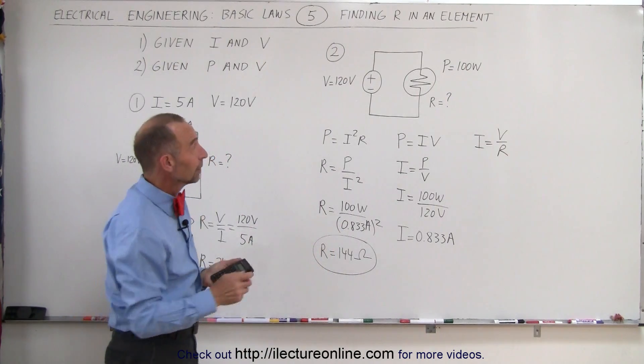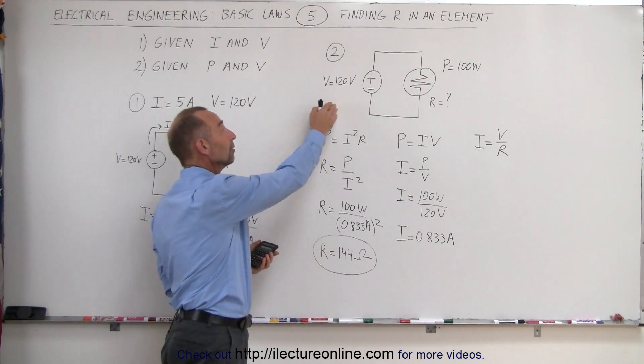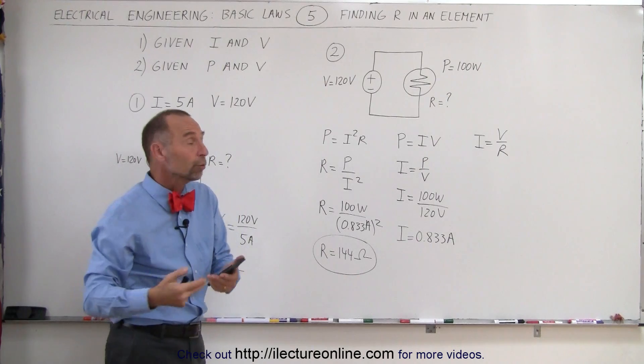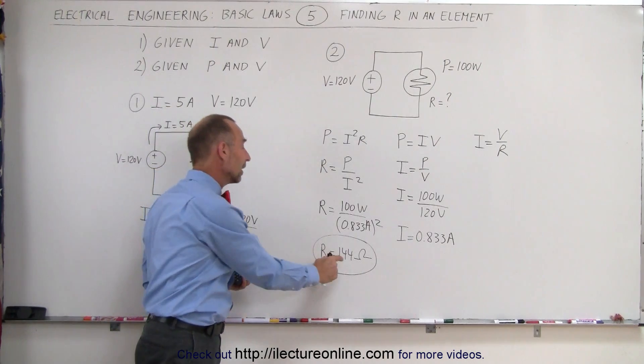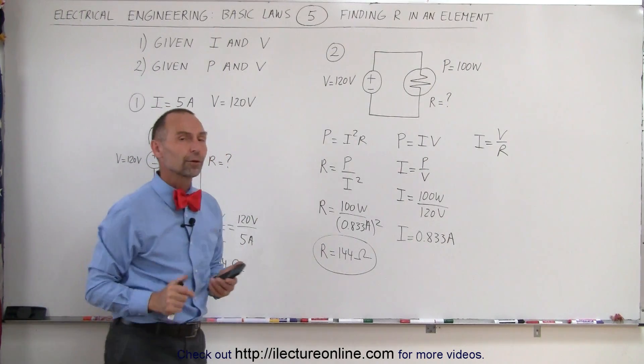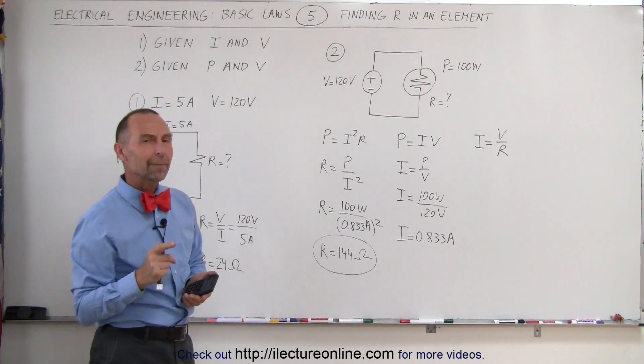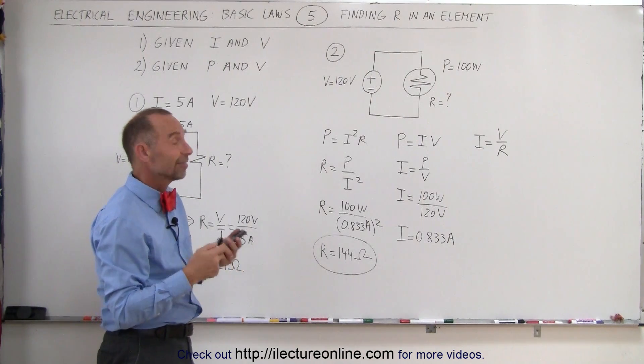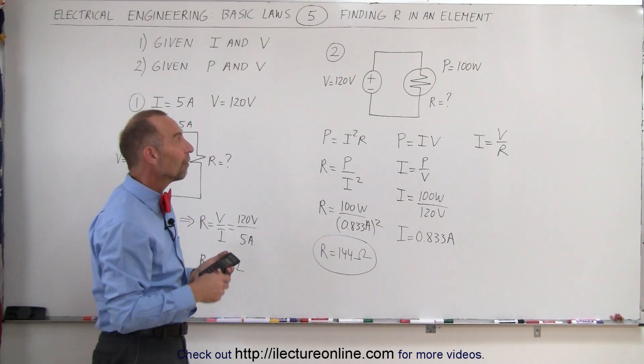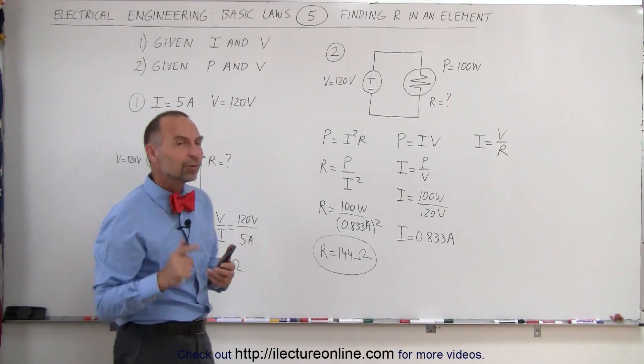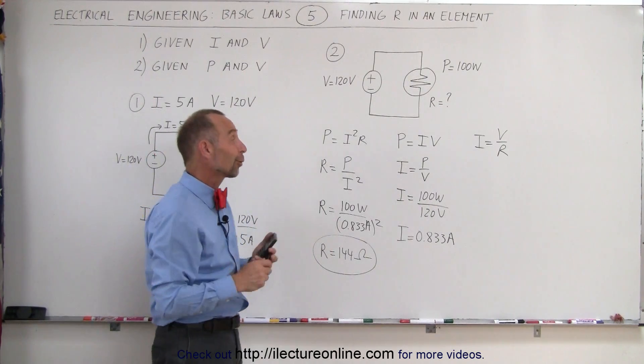Thus, a light bulb that is 100 watts connected to a 120 volt source, which is the typical household voltage, has a resistance equal to 144 ohms. Now what would happen if we had a light bulb that was only 60 watts? What is the resistance of a 60 watt light bulb? The result may be somewhat surprising.